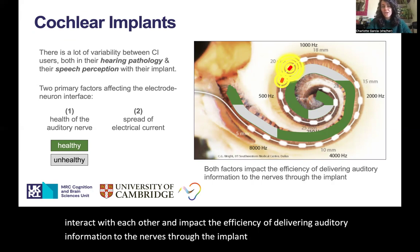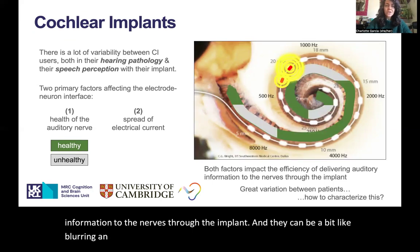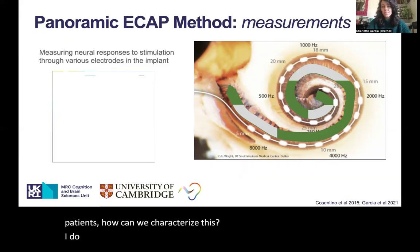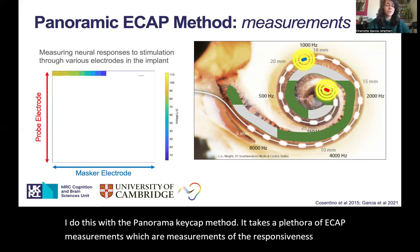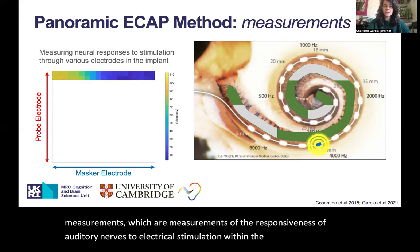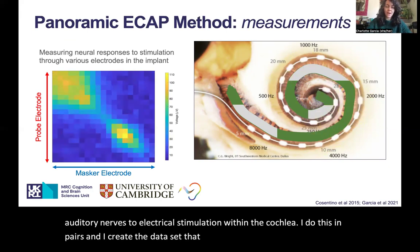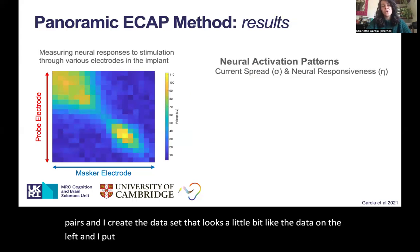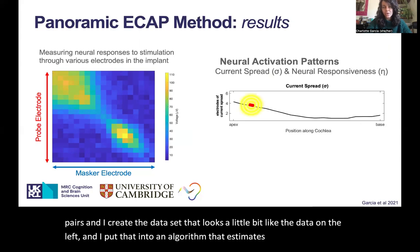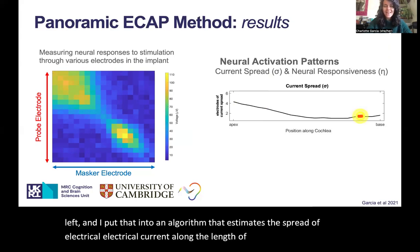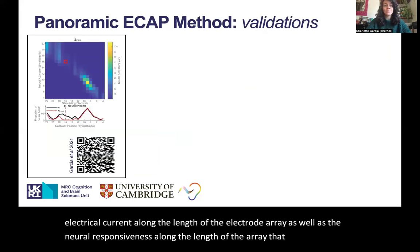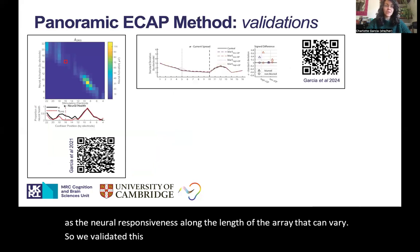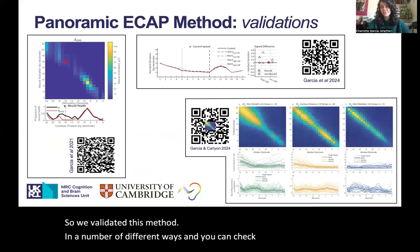And they can be a bit like blurring an auditory stimulus. So since there's great variation between patients, how can we characterize this? I do this with the panoramic ECAP method. It takes a plethora of ECAP measurements, which are measurements of the responsiveness of auditory nerves to electrical stimulation within the cochlea. I do this in pairs and create a dataset that looks a little bit like the data on the left, and I put that into an algorithm that estimates the spread of electrical current along the length of the electrode array, as well as the neural responsiveness along the length of the array. We've validated this method in a number of different ways — you can check out these papers if you're interested in more details.